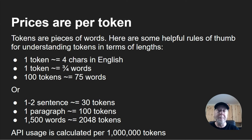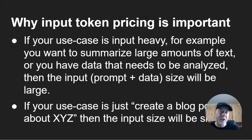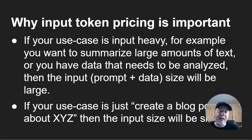API usage is quoted in per million tokens. The system reads how many tokens you've used, adds that up for billing, and charges you per million. There are two types of tokens: input tokens and output tokens. Input tokens are the prompt and any data you give it. Output tokens are how much content is generated by the LLM. If your use case is input-heavy — for example, summarizing large amounts of text or analyzing data — your prompt plus data will be quite big. If your use case is just 'create a blog post about X,' that's a short prompt, so input tokens will be negligible in the overall pricing.